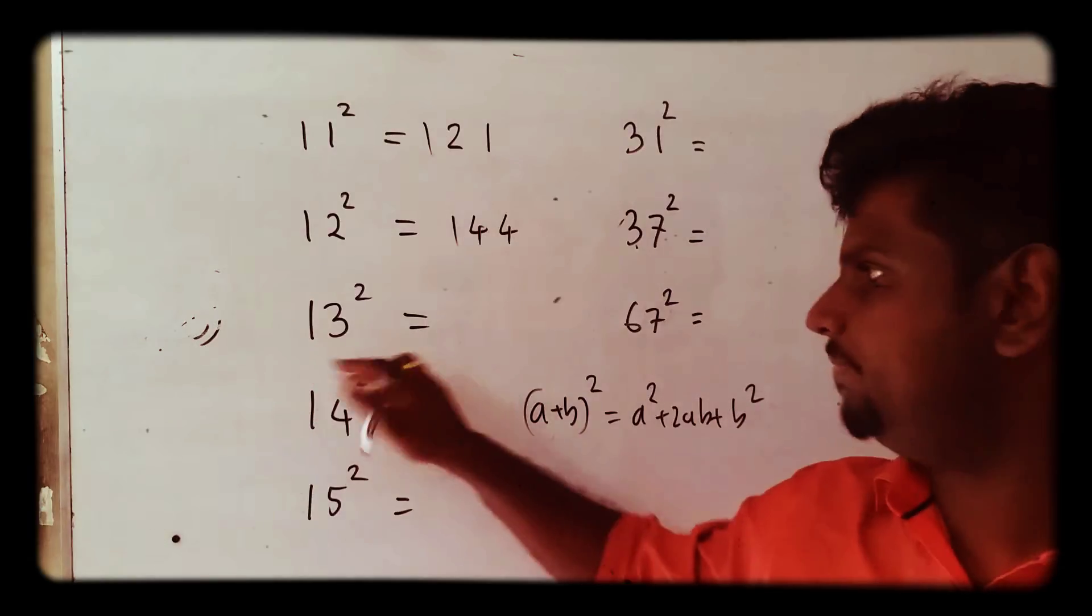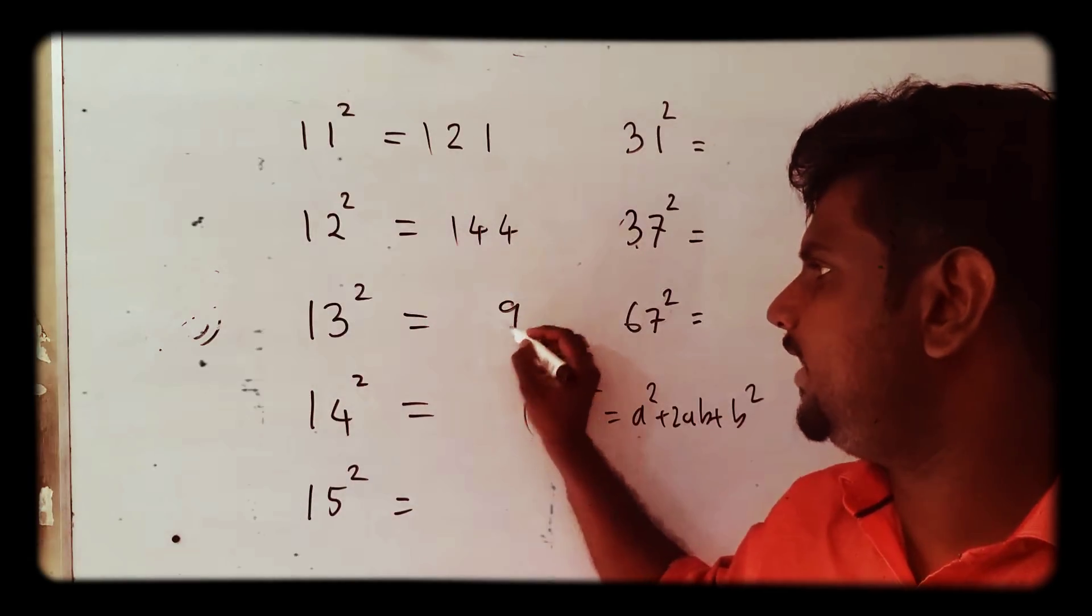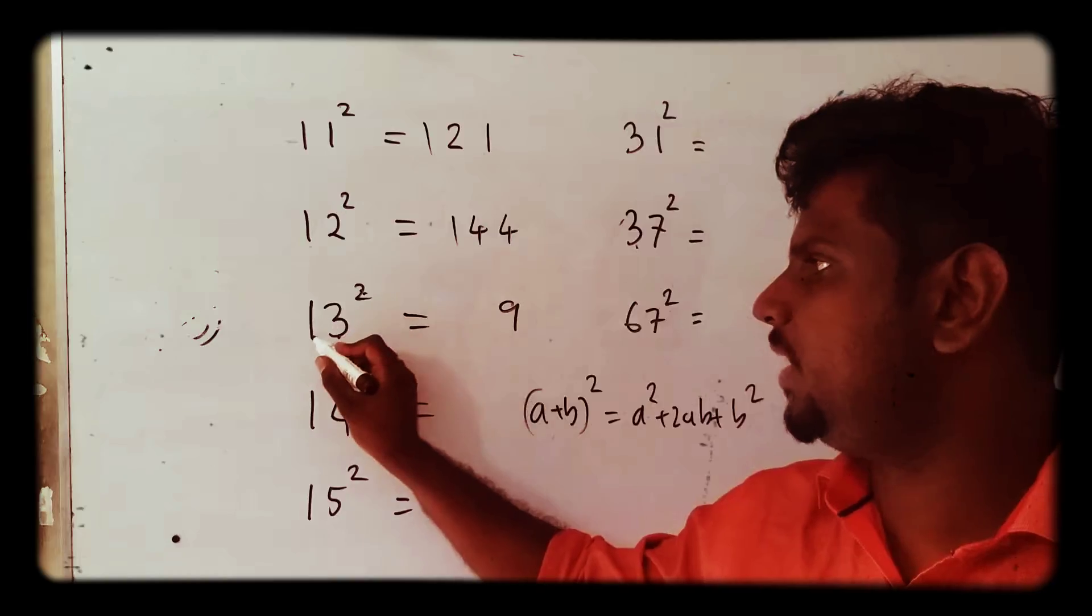3² = 9, 2 × 1 × 3 = 6, 1² = 1. That's right.